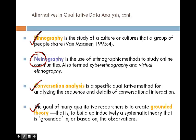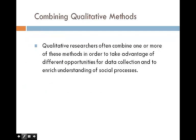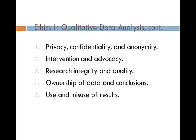The goal of many qualitative researchers is to create grounded theory — to generate theory that is grounded in the historical and real social context. Qualitative research builds up inductively a systematic theory that is grounded in or based on observation. Researchers often combine one or more of these methods to take advantage of different opportunities for data collection and to enrich understanding of social processes.